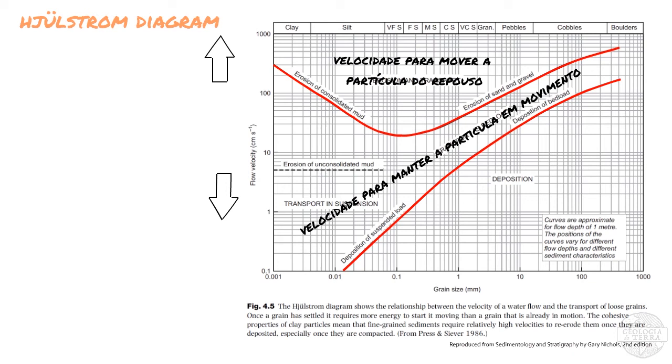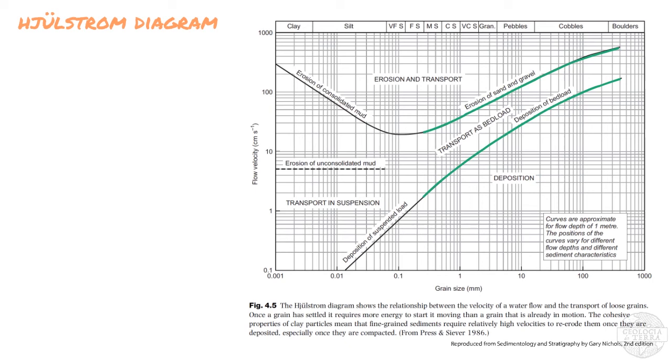Now, another important feature of this diagram is that, on the right-hand side of the graph, for particles larger than fine sand, the erosion and deposition lines parallel each other, meaning that erosion and transport of particles of increased grain sizes require an increase in flow velocity.